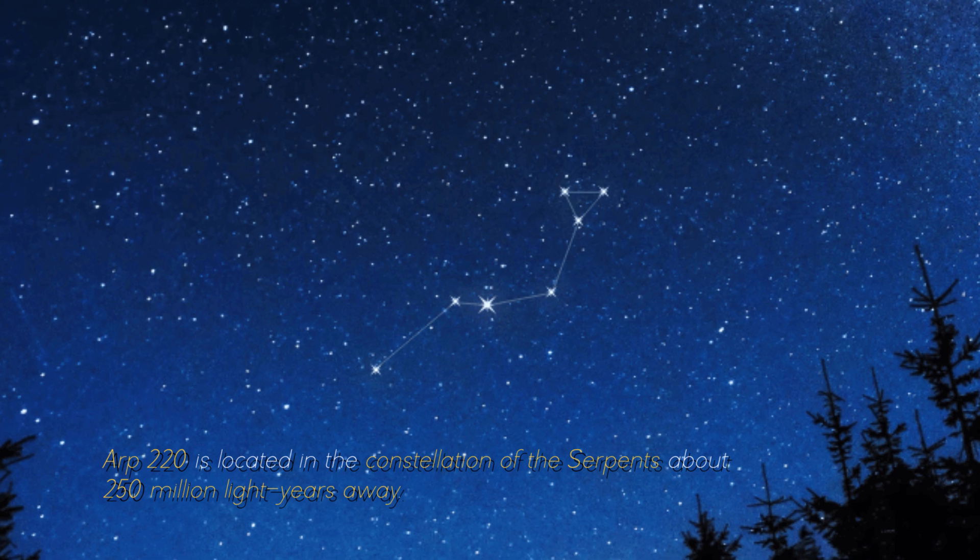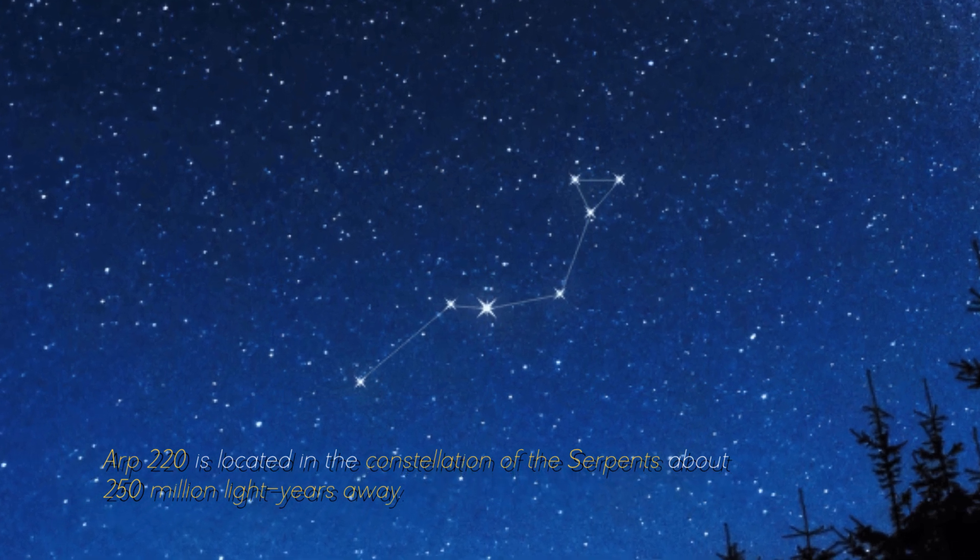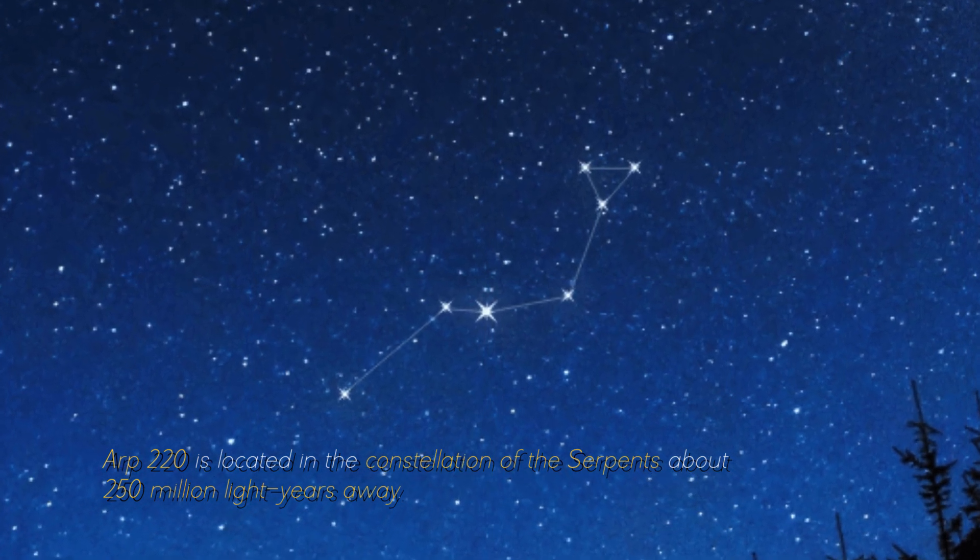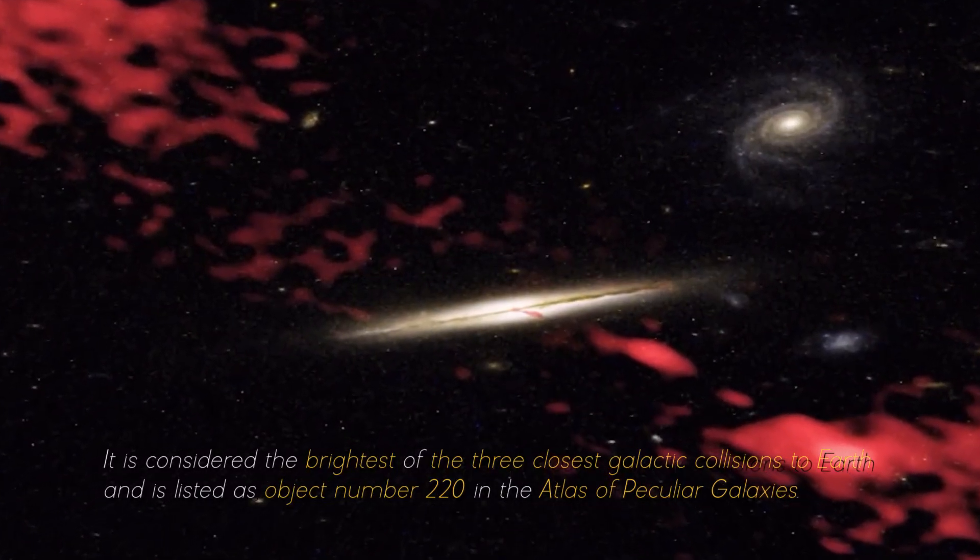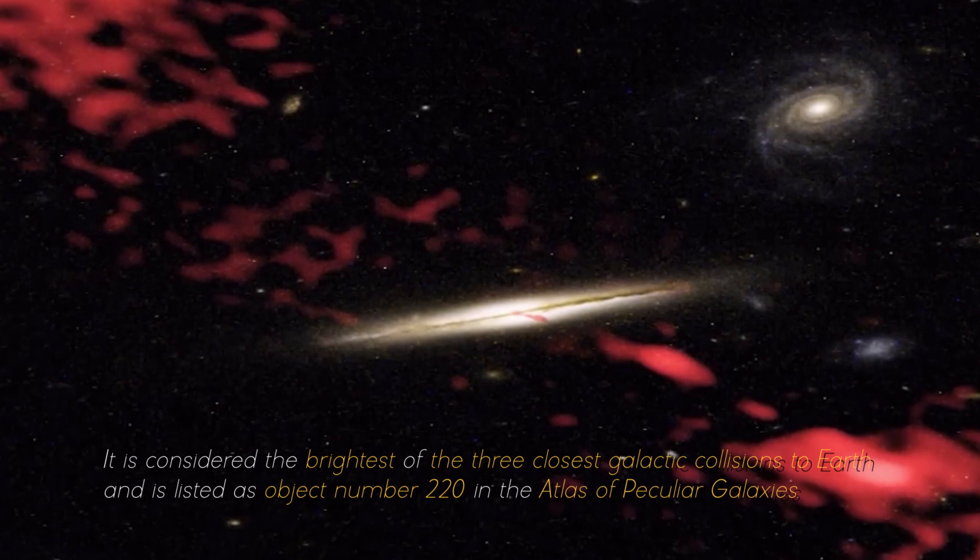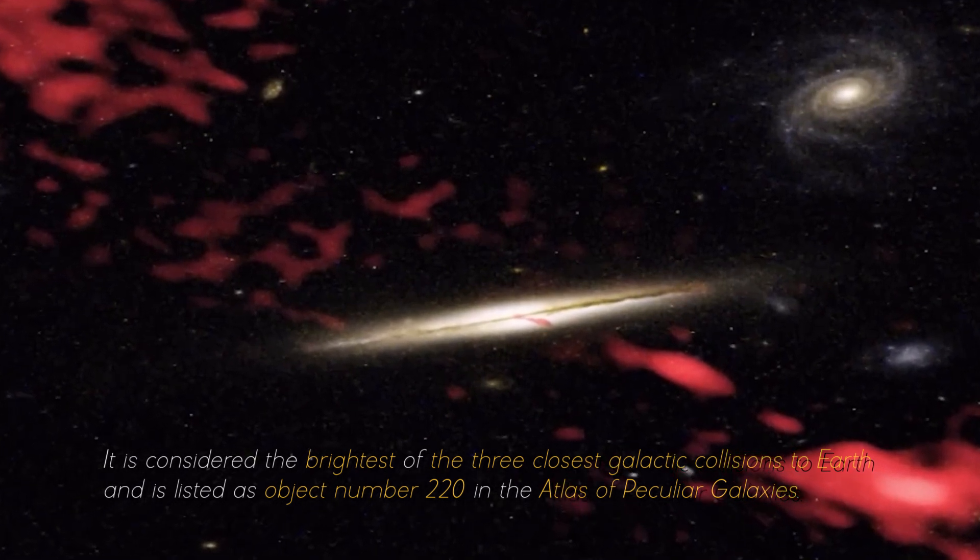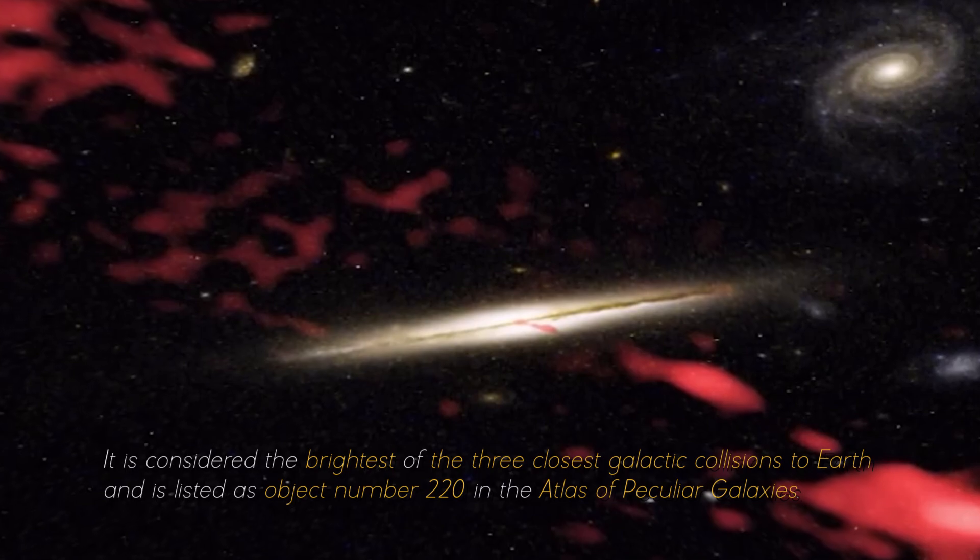ARP 220 is located in the constellation of the Serpents, about 250 million light years away. It is considered the brightest of the three closest galactic collisions to Earth, and is listed as object number 220 in the Atlas of Peculiar Galaxies.